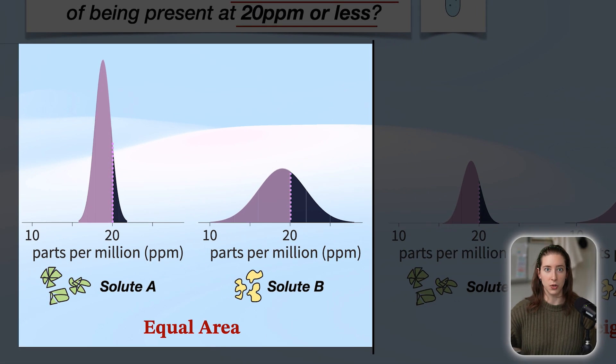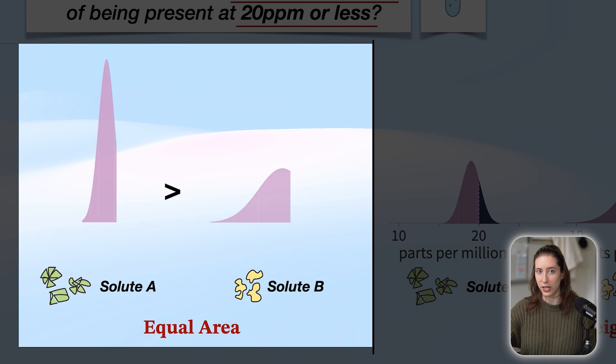Now let's look at the equal area side. With this visualization, we can just take the two partial areas and compare them to one another. And we can see that solute A has a larger partial area than solute B. And therefore, solute A has a larger probability of being present.